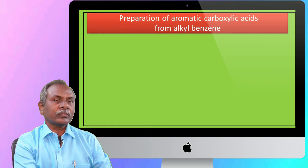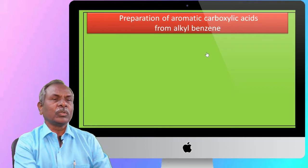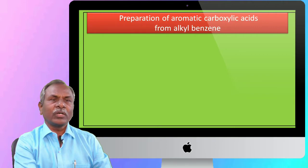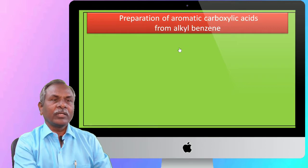Before discussing the preparation of aromatic carboxylic acids from alkyl benzene — that is, oxidation of alkyl benzene to benzoic acid — first of all, we will discuss the oxidation of alkyl benzene, which you learned in 11th standard in the chapter on hydrocarbons.